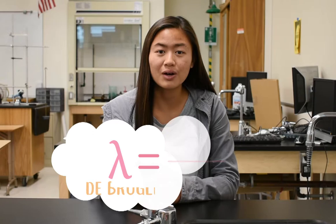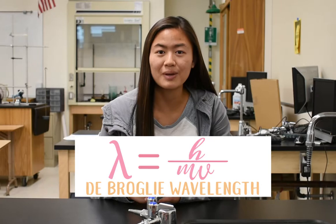Before we dive into this phenomena, let's step back and look at some background information. According to quantum mechanics, particles exhibit properties of both particles and waves, an idea called wave-particle duality. Particles, like waves, have a wavelength called a de Broglie wavelength, equal to Planck's constant h divided by the particle's momentum mv.